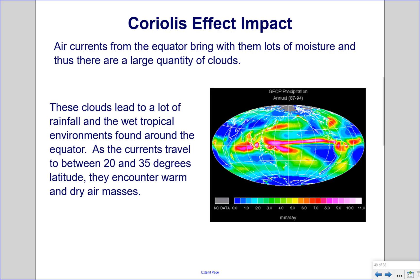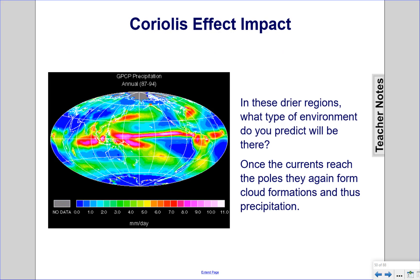Coriolis effect impact. Air currents from the equator bring with them lots of moisture and thus there are a large quantity of clouds. These clouds lead to a lot of rainfall in the wet tropical environments found around the equator. As the currents travel to between 20 and 35 degrees latitude, they encounter warm and dry air masses. In these drier regions, what type of environment do you predict will be there? Once the currents reach the poles, they again form cloud formations and thus precipitation.